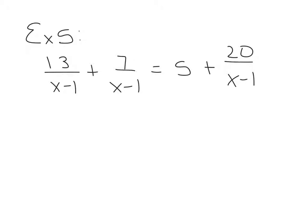Example 5 is on the top of page 163. It says 13 over x minus 1 plus 7 over x minus 1 equals 5 plus 20 over x minus 1. And this is a very complicated rational equation here. The good news is all the denominators are the same. So that will be your common denominator, x minus 1. We're going to multiply by x minus 1. And you can put it over 1 if it helps you. But this is just going to be distribute.